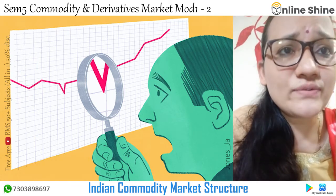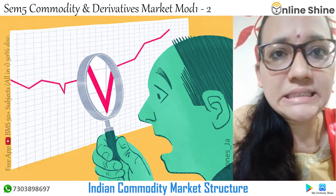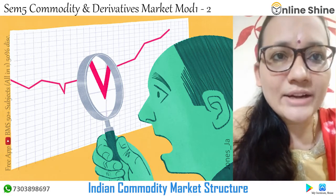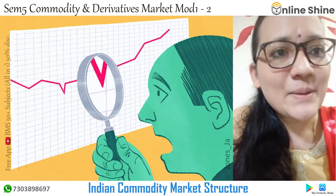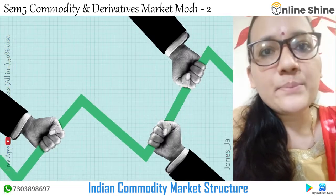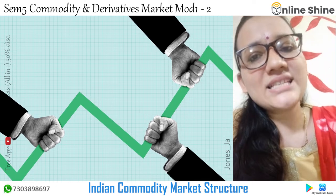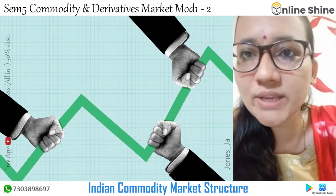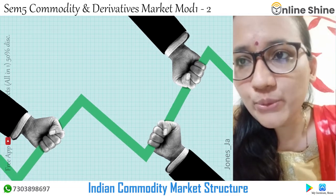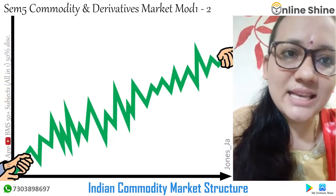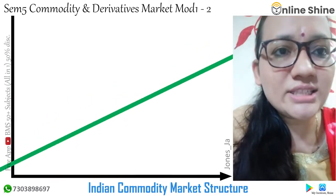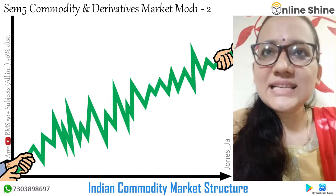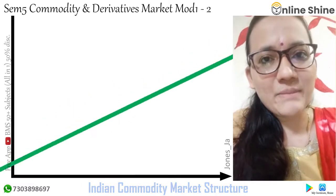Further responsibilities include the Prevention of Black Marketing and Maintenance of Supply of Essential Commodities Act 1980, monitoring of prices and availability of essential commodities, Internal Trade, Training of Legal Metrology, the Emblems and Names (Prevention of Improper Use) Act 1952, laying down specifications, standards and codes, ensuring quality control of biofuels, Consumer Cooperation, and the National Test Houses. These are the works of the Ministry of Consumer Affairs, which controls the commodity market in India.